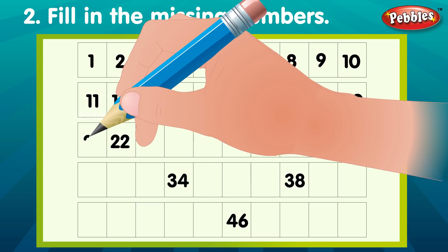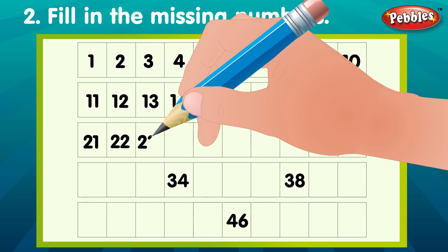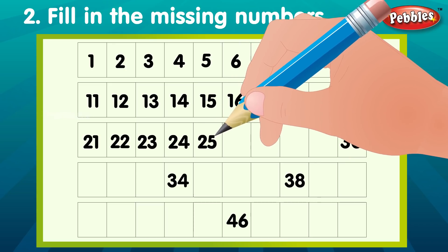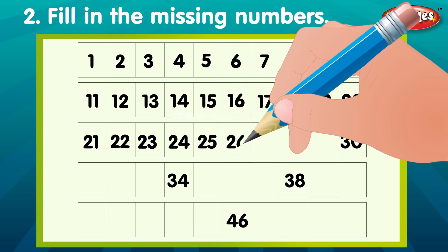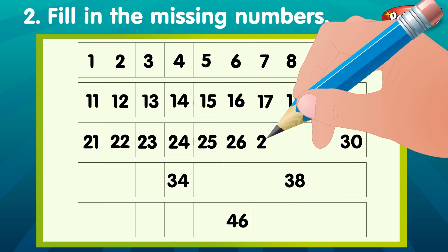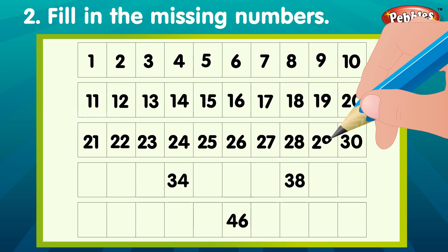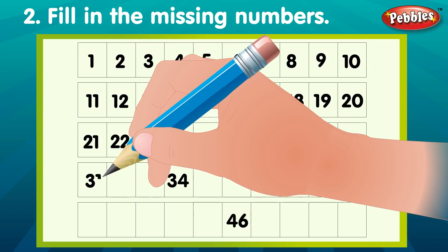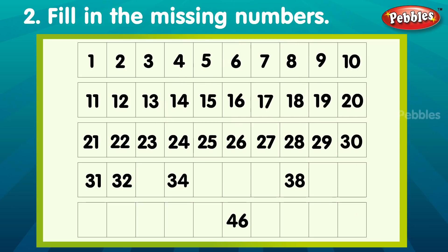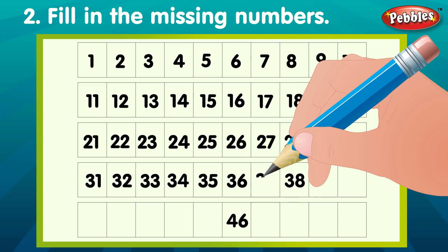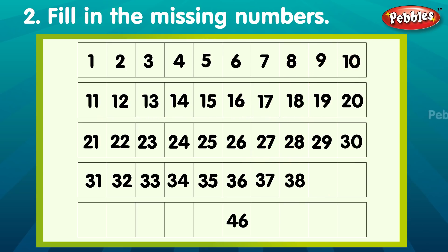Twenty-one. Twenty-three. Twenty-five. Twenty-six. Twenty-seven. Twenty-eight. Twenty-nine. Thirty-one. Thirty-two. Thirty-three. Thirty-five. Thirty-six. Thirty-seven. Thirty-nine. Forty.